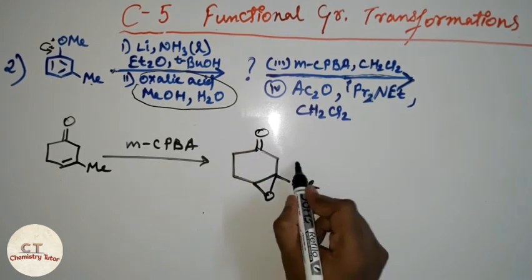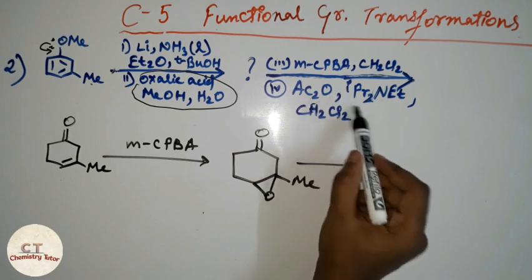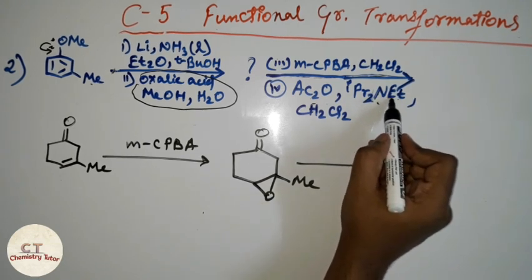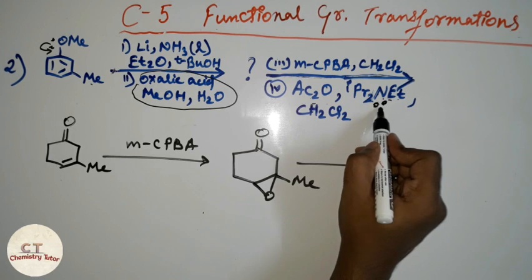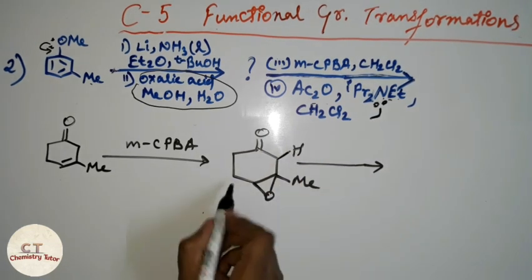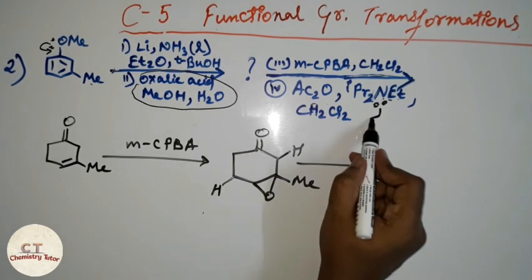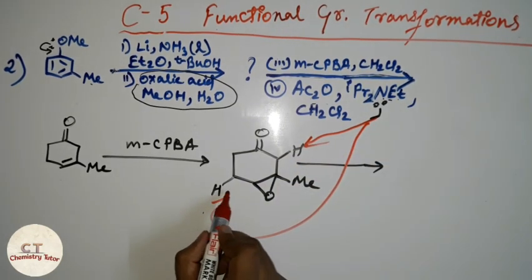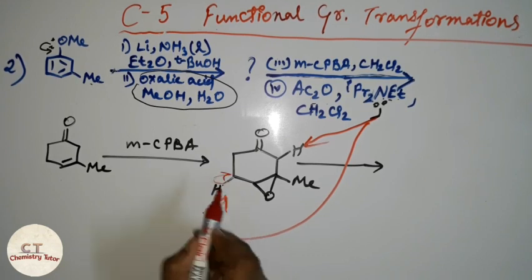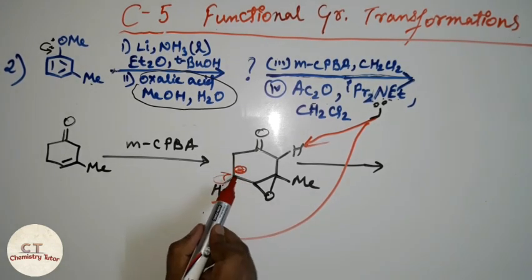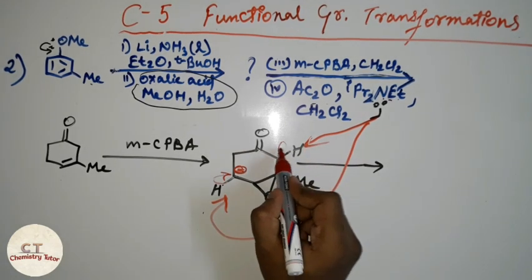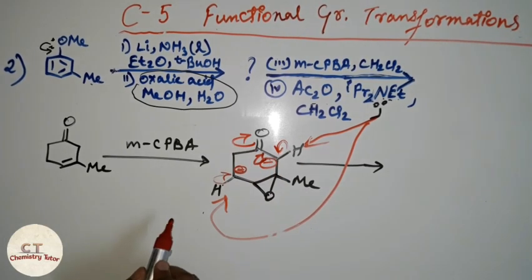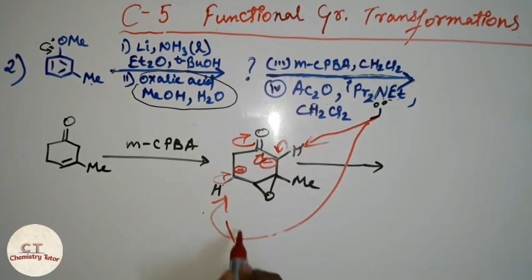In the next step, acetic anhydride (Ac2O) is given in the presence of a base, diisopropyl ethylamine. It is going to abstract a proton so that the epoxide ring can open. There are two protons available for abstraction. Abstracting the first proton generates an unstabilized negative charge, whereas abstracting the second proton generates a negative charge stabilized by delocalization. So the second proton is abstracted.